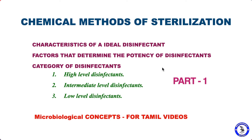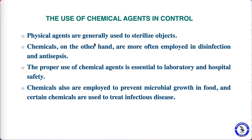This is part one of chemical methods of sterilization. Before entering the topic, we should know what sterilization is. Sterilization is a process that destroys or eliminates all microbial forms of life. It is mainly carried out in laboratories and hospitals by physical or chemical methods. Physical methods include heat sterilization such as dry heat and moist heat, radiation, and filtration — and are generally used to sterilize objects such as glass or surgical instruments.